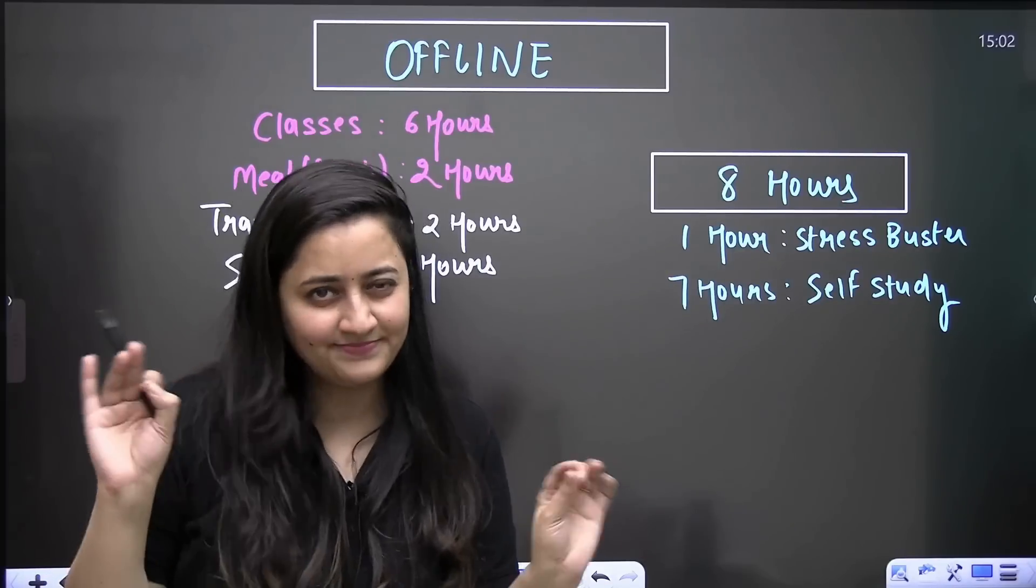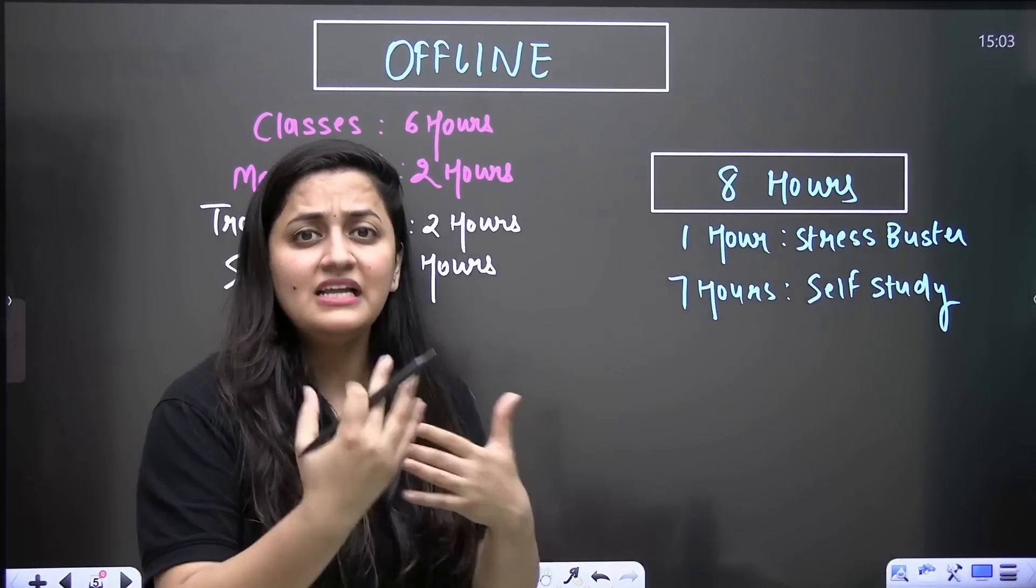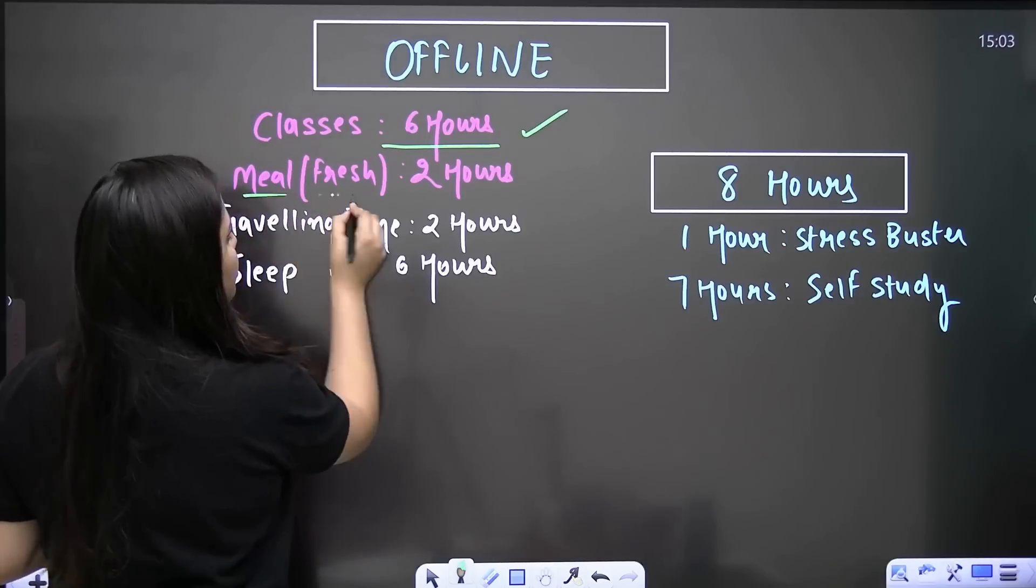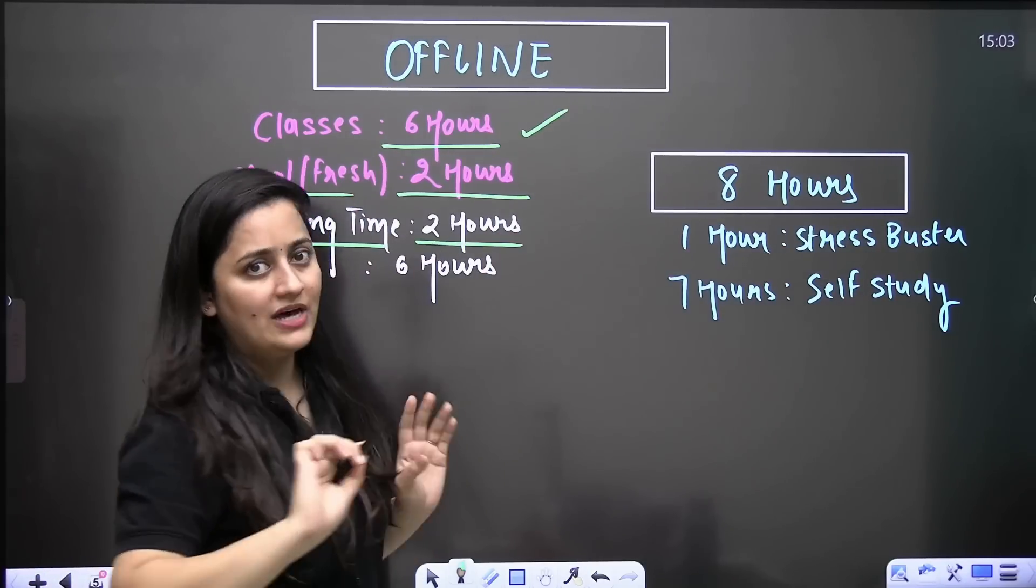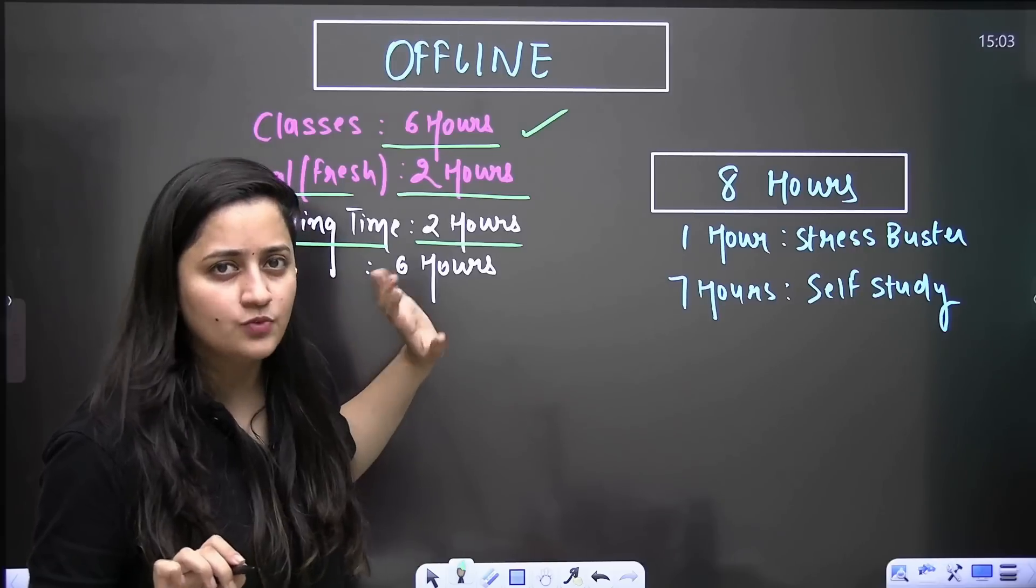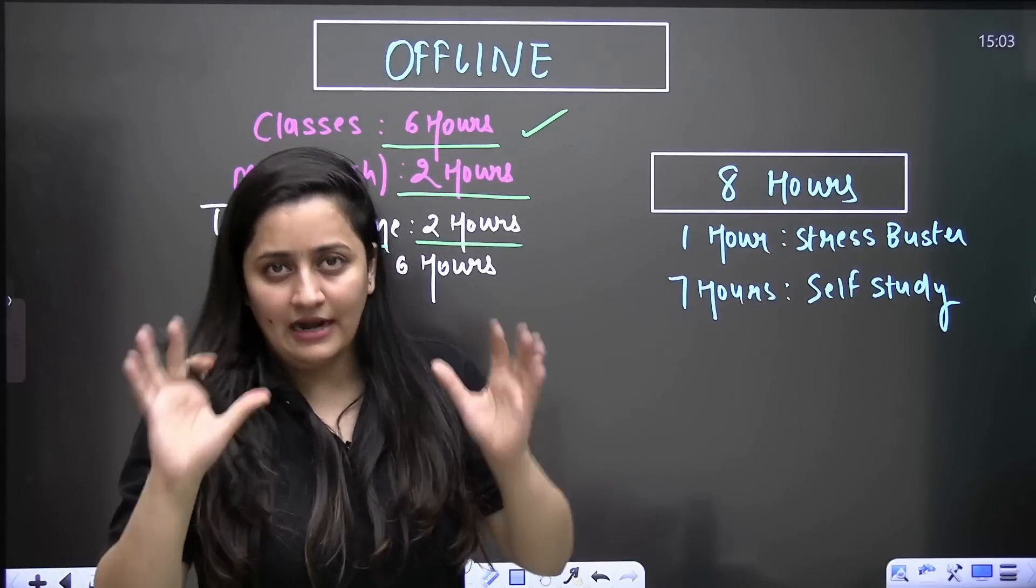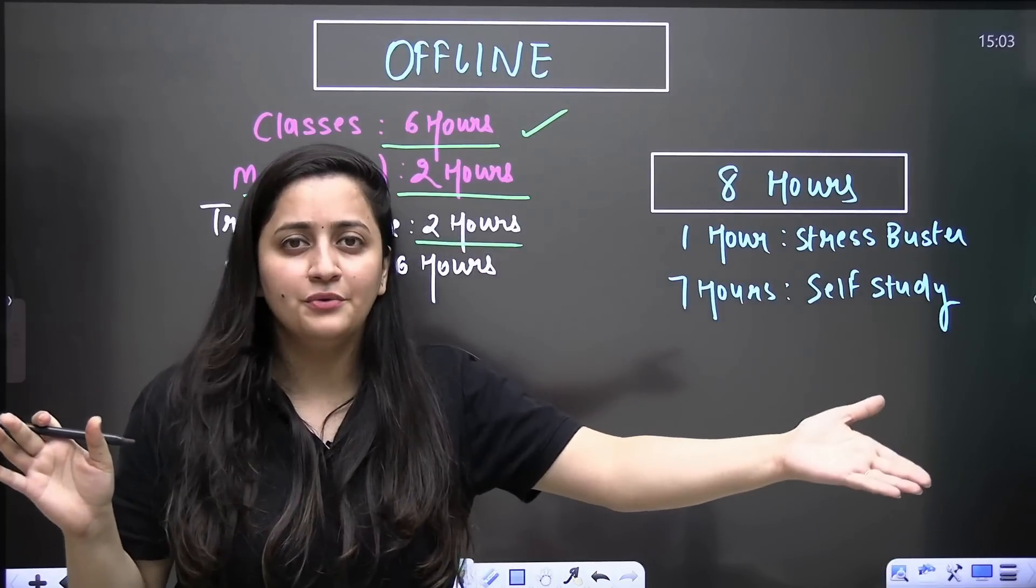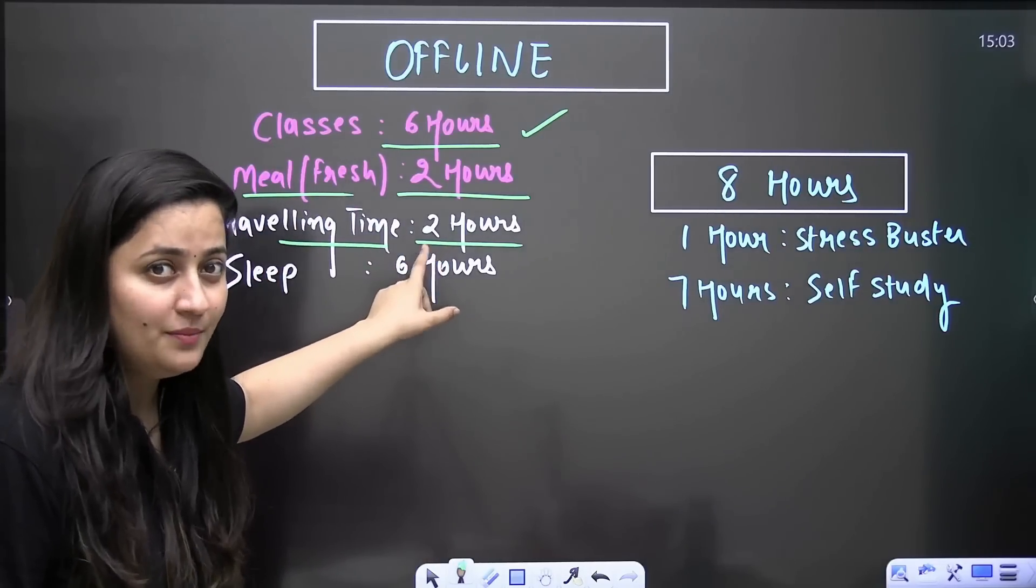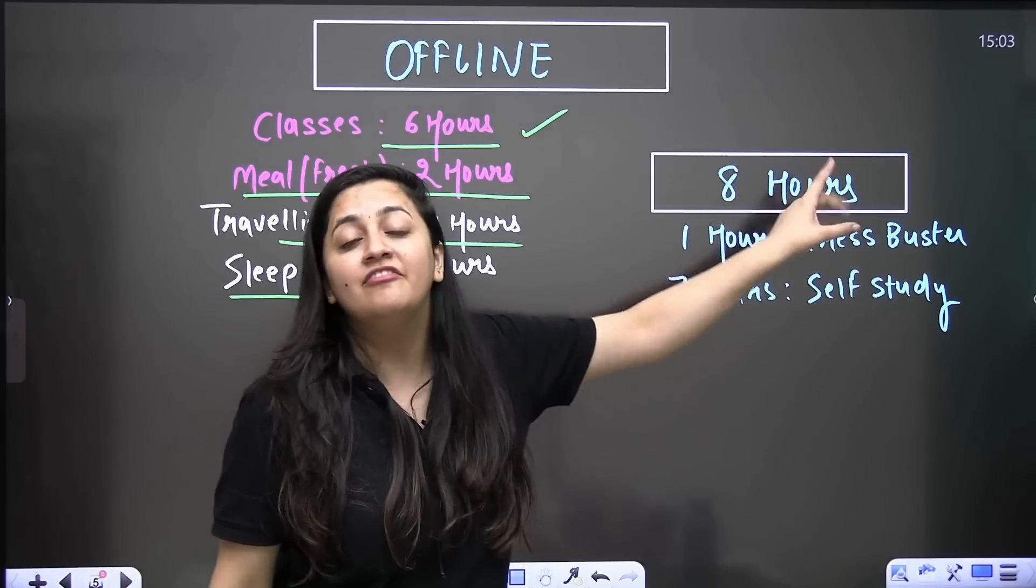Now come to the students who are going for offline classes. In offline classes, this is a little bit of a problem that you have to travel as well. Mostly students prefer the institute nearby, but sometimes they have to travel. So here again, classes for six hours, meal and freshen up two hours, traveling time two hours. This is what you are investing now. You have to spend time on traveling as well. Maybe your institute is nearby, but you have to get up, you have to get ready, you have to go like this and that. These things are there. And obviously if you're going to attend classes, you're going to talk to your friends there also. So I'm keeping two hours for that, but I know many times you make it four hours. So please try to avoid it. And then sleep again is of six hours. So still you are left with eight hours.